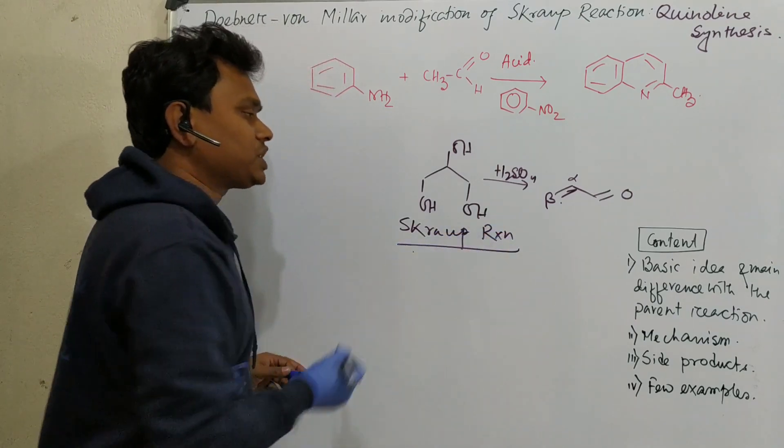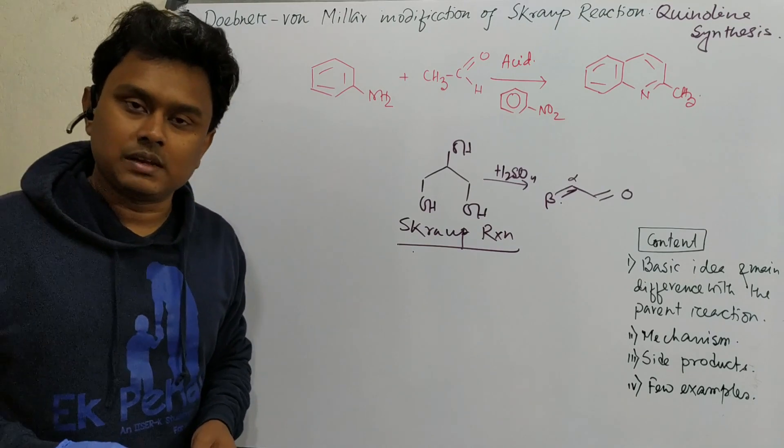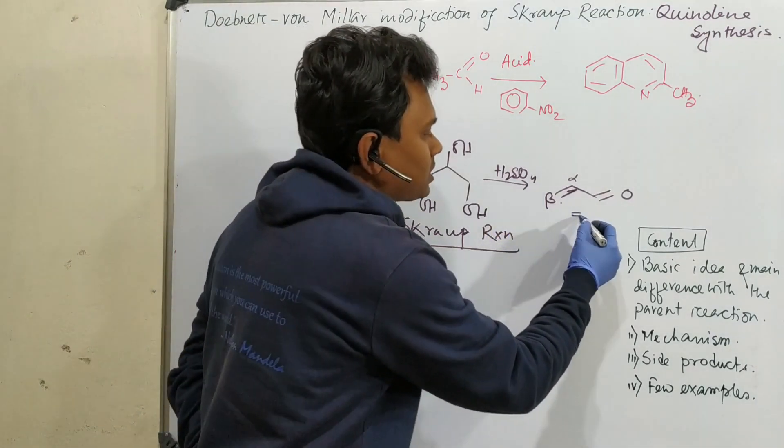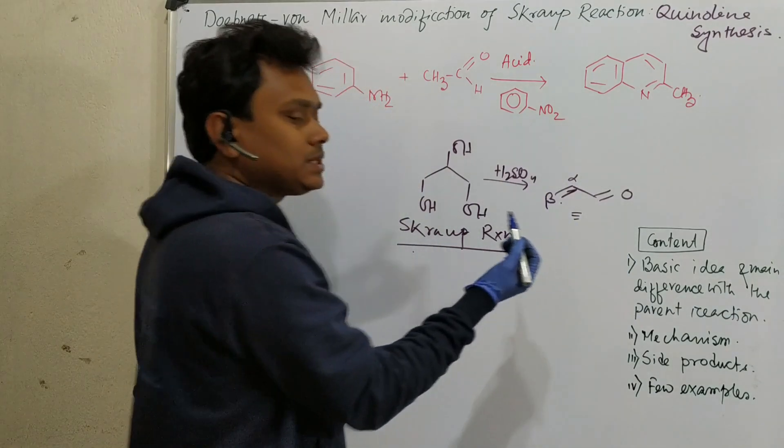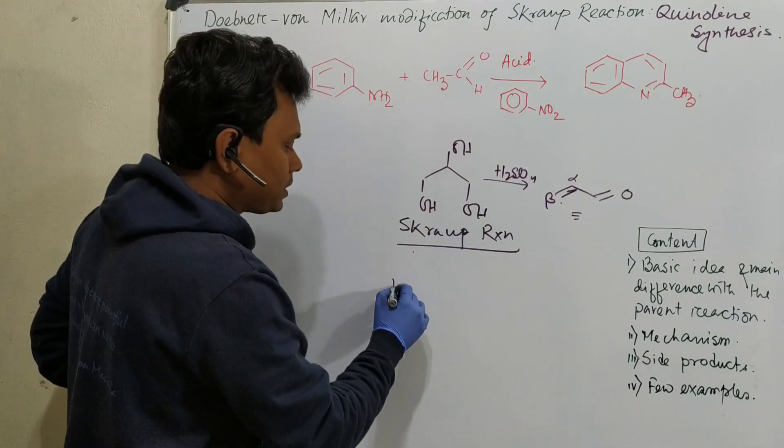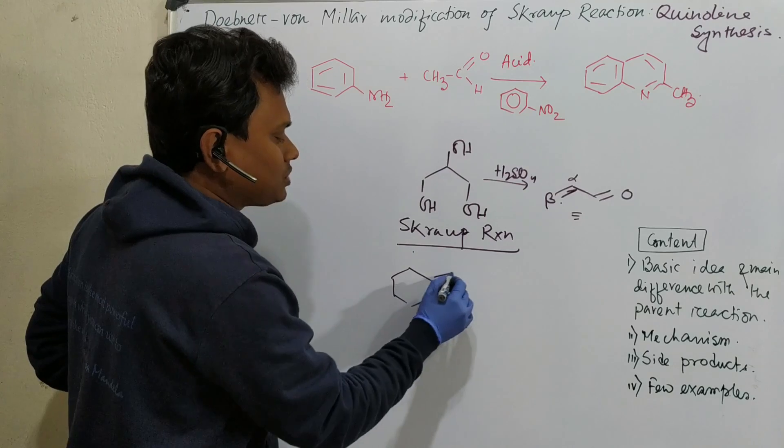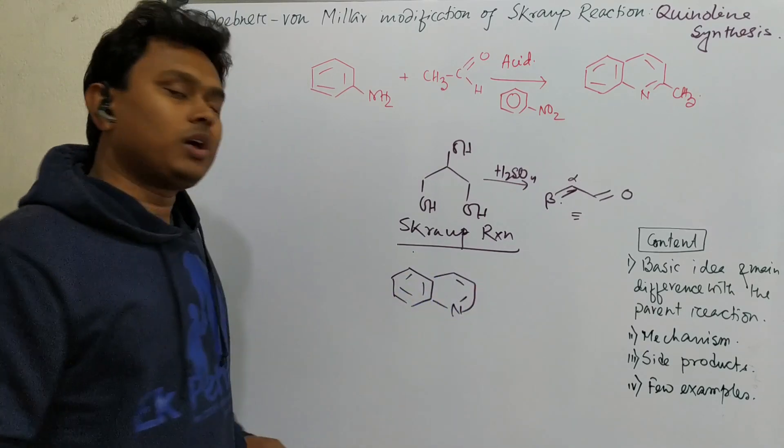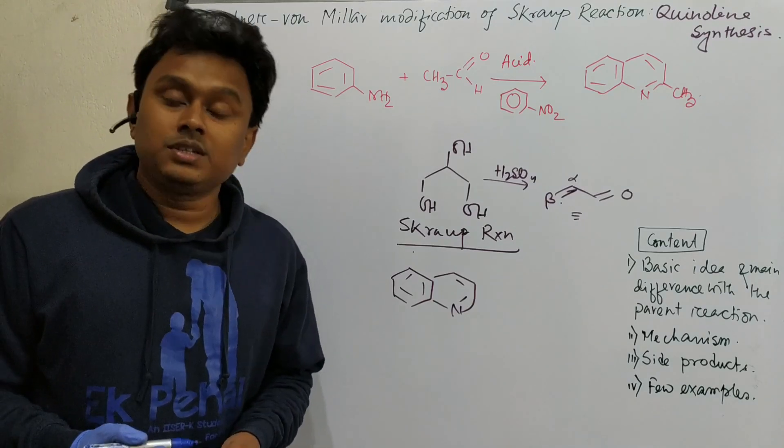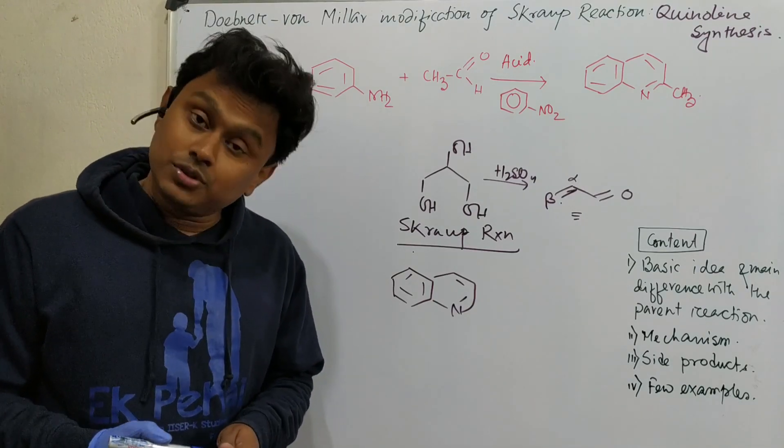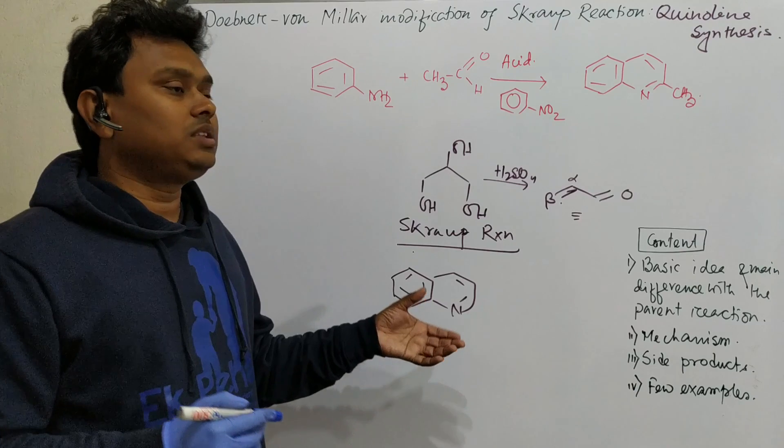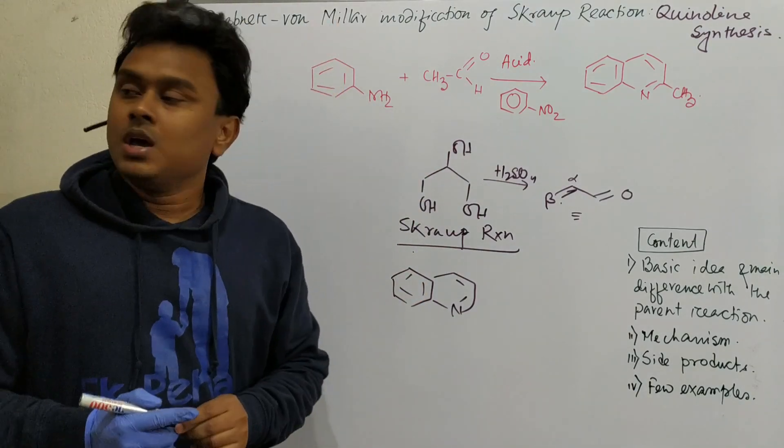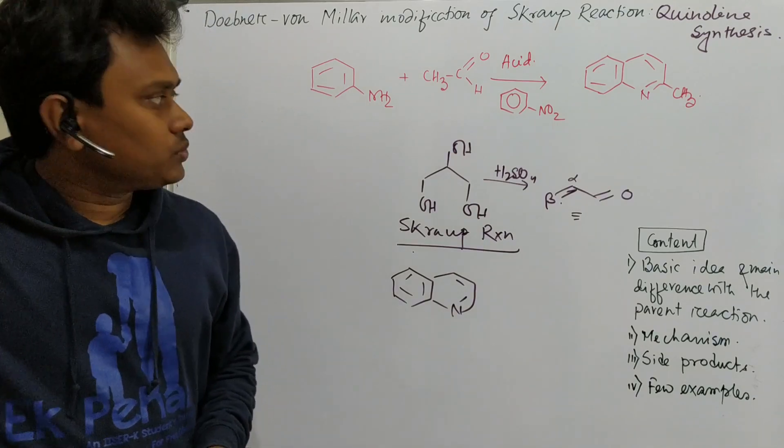Now question its modification. Why its modification is essential? Its modification is essential because of the limited substrate scope. Actually this method is very useful for preparation of simple quinoline, but if you want to have some substituted derivative, how do you get? Then there was a need of modification that was done by Doebner and Von Miller. So this thing we are going to learn today.